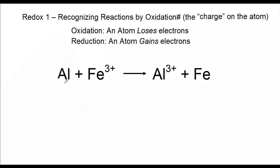In this case we have aluminum and Fe³⁺ producing Al³⁺ and iron. I want to point out that just because there's nothing written around the aluminum as far as charge, what is implied is that there's zero charge on the iron and the aluminum.